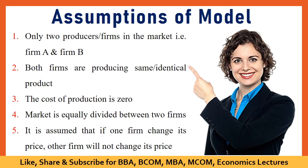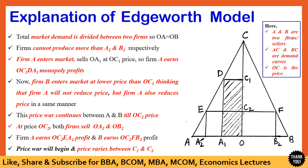These are the main assumptions of this model: there are two producers or two firms in the market, the products are identical, the cost of production is zero, and the market is equally divided between the two firms such that each firm's demand curve is half of the total market demand. It is also assumed that if one firm changes its price, the other firm will not change its price.